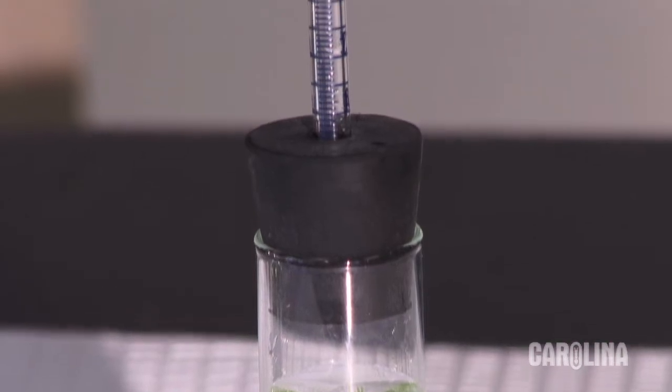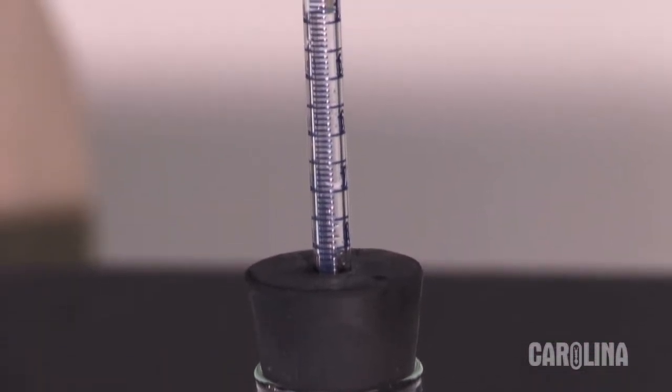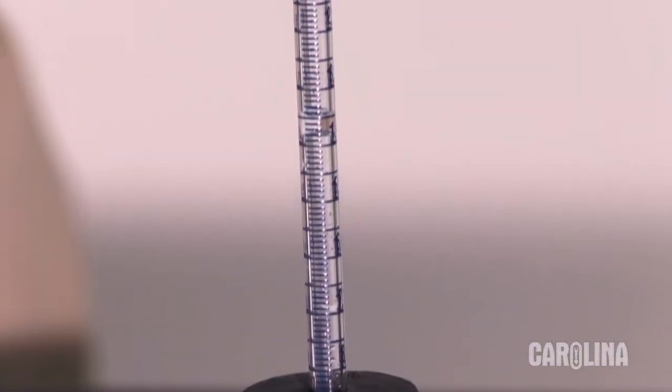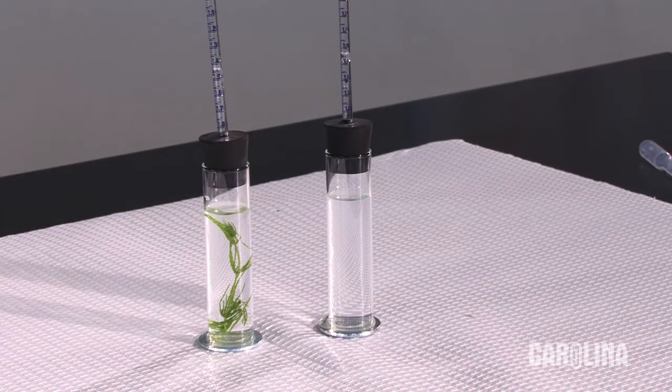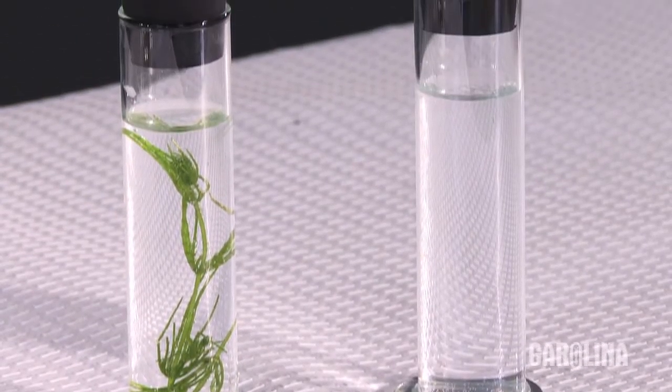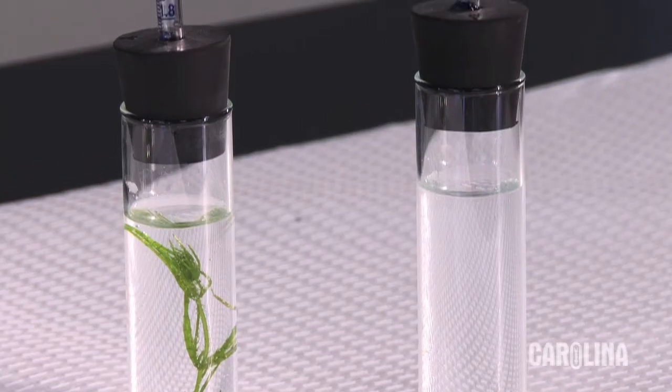This forces an air bubble up the pipette. Wait a few seconds to be certain there's no leak. As oxygen is produced, the bubble rises in the pipette. This system is temperature sensitive, so set up a second tube without a plant as a control. Any change in the control is used to correct the reading for oxygen production.